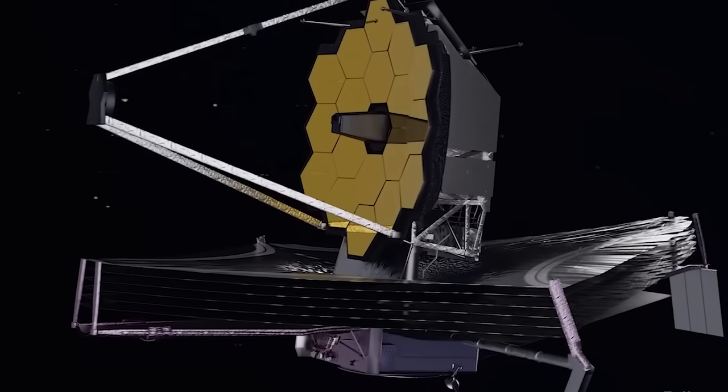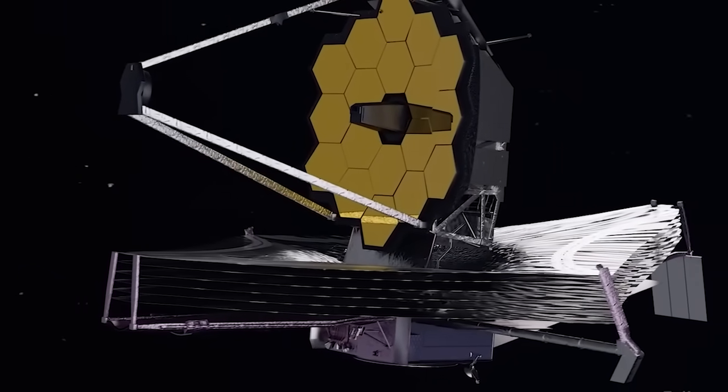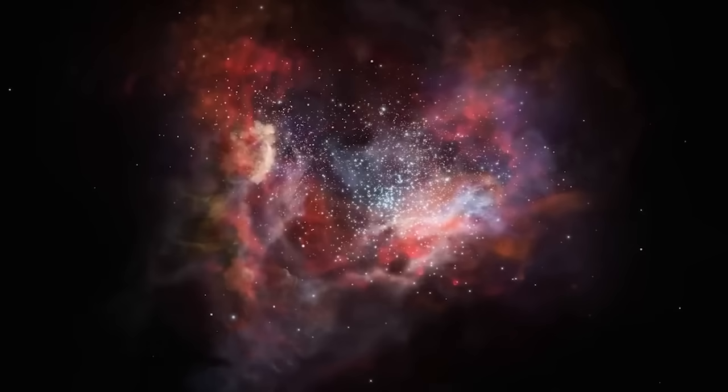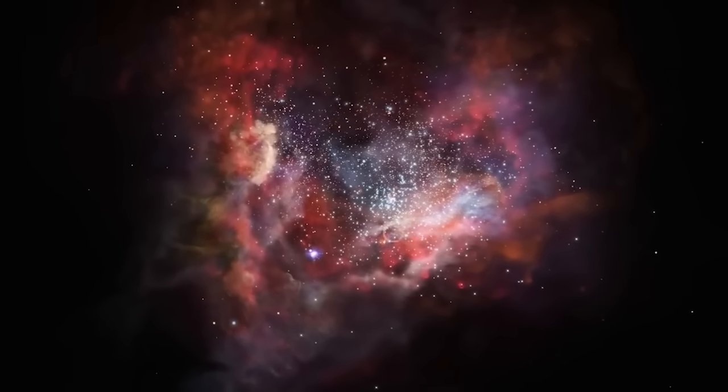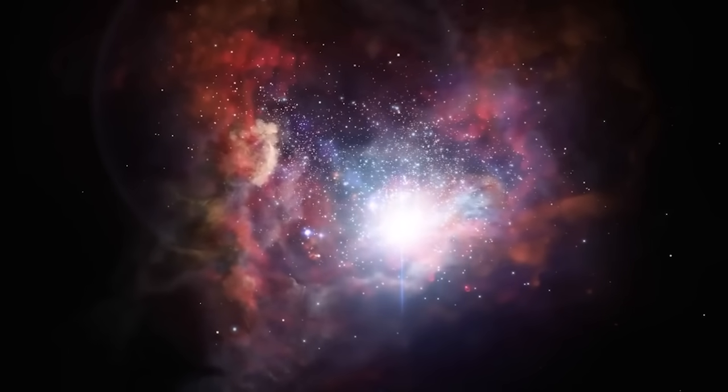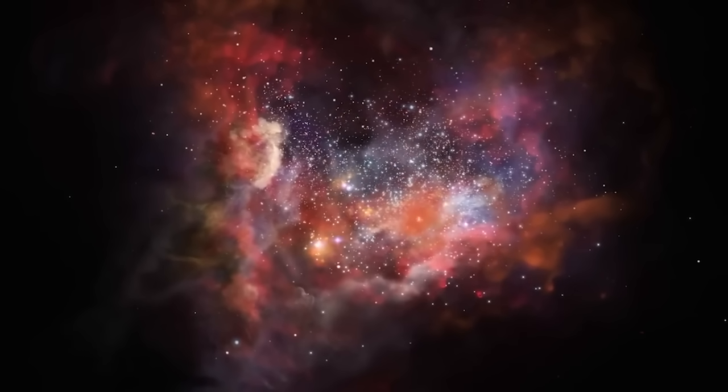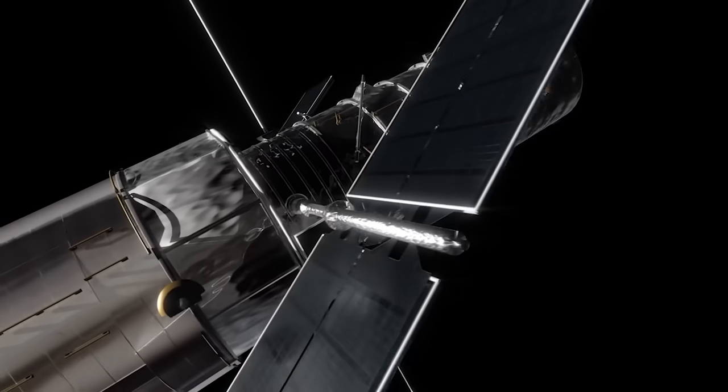The observations of the James Webb are focused on the near and mid-infrared. Unlike Hubble, it can observe neither the ultraviolet nor the entire visible light spectrum. It therefore studies wavelengths from 0.6 to 28 micrometers.